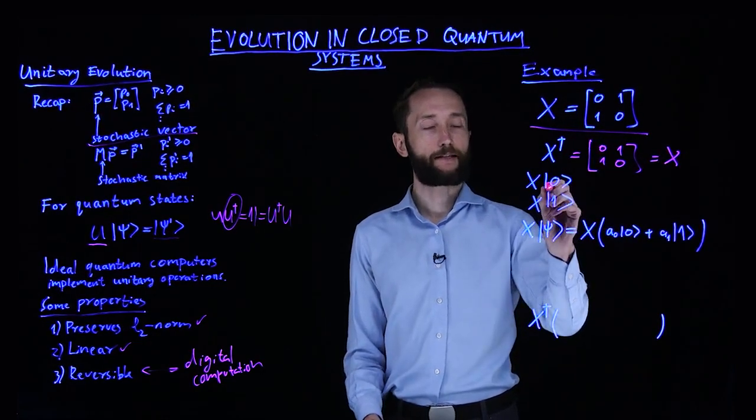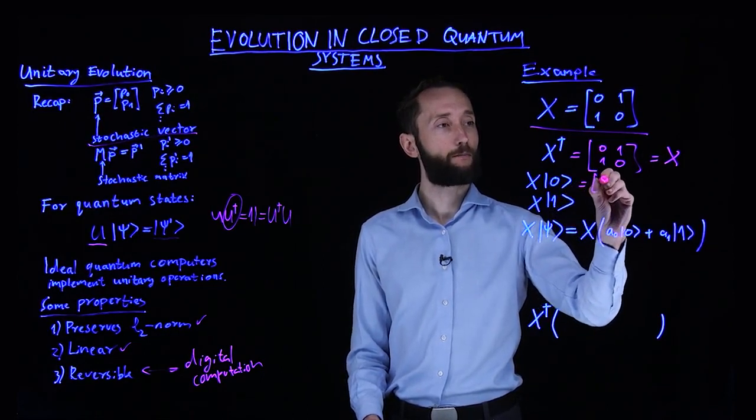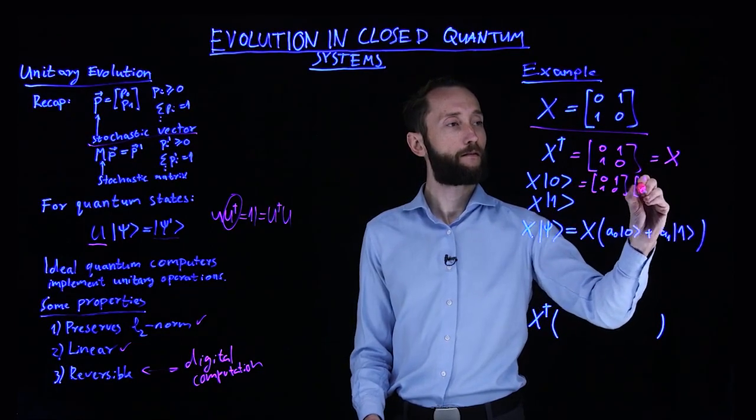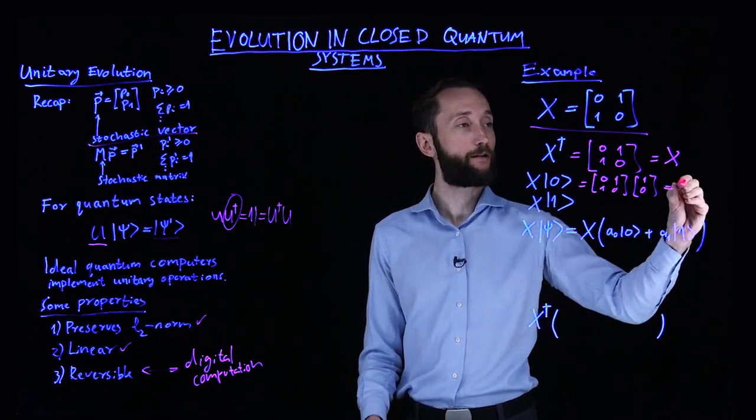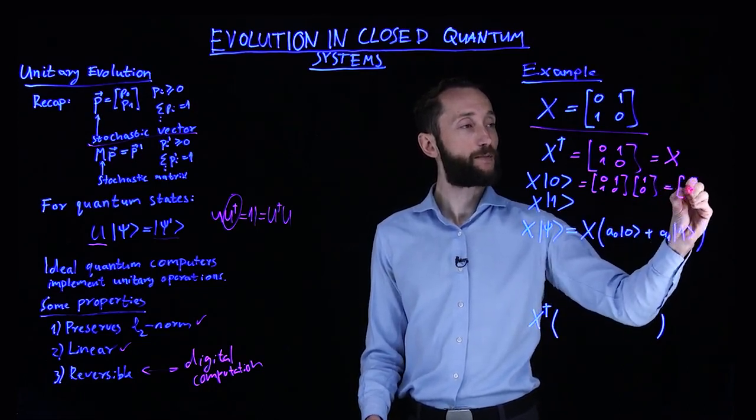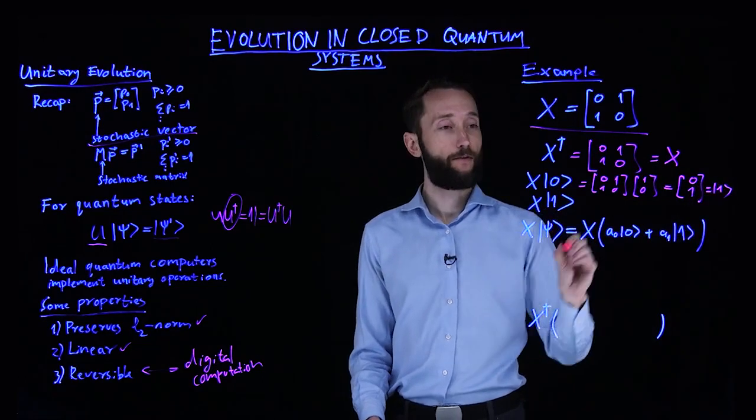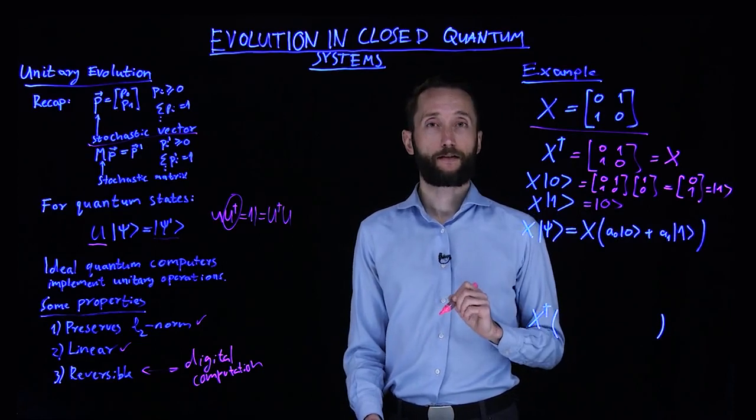Now if we apply this gate on zero ket, and we can write out what that means. Then if you perform the matrix vector multiplication, then you're going to see that it flips it into the one ket. You can very easily check that it does the same thing on the zero ket.